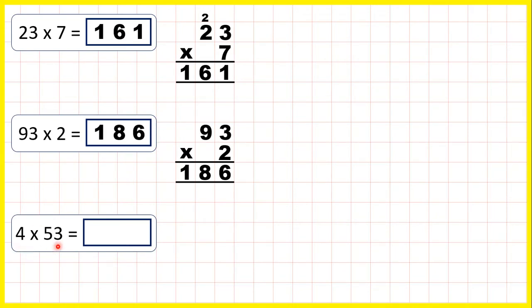Now we have 4 times 53, and though the question starts with the single digit number here, we set out our short multiplication in exactly the same way, putting the larger number on top. And we can do that because with multiplication, order doesn't matter.